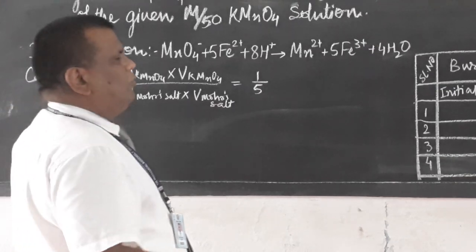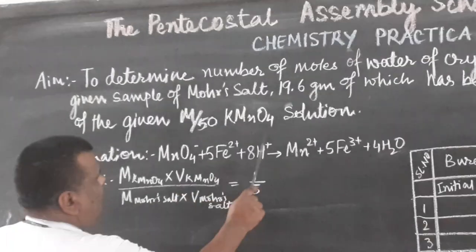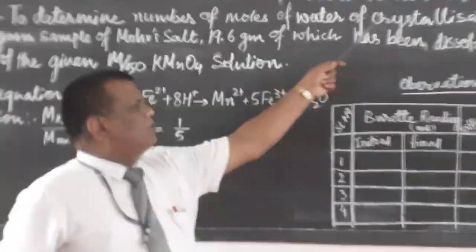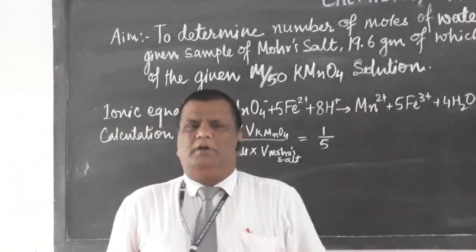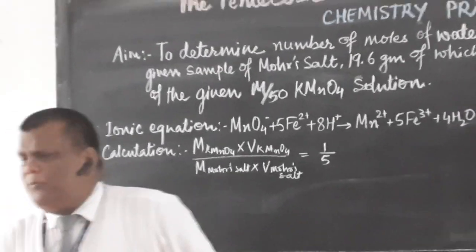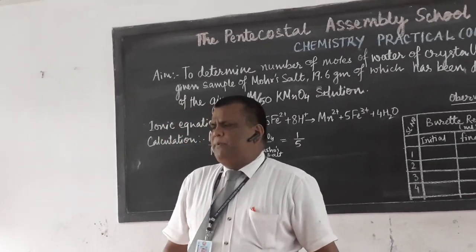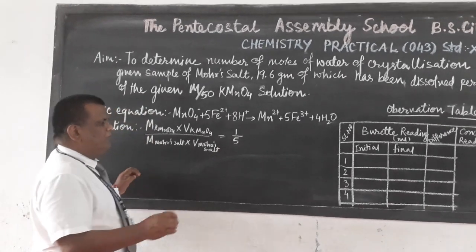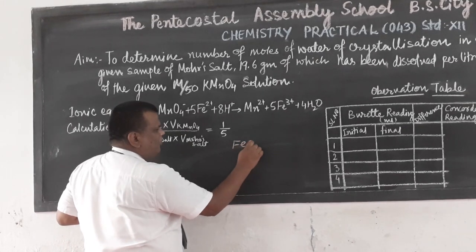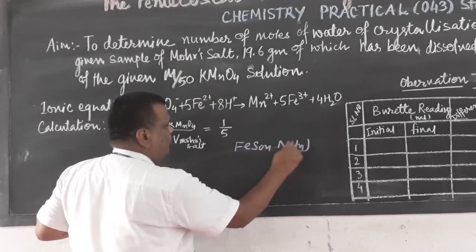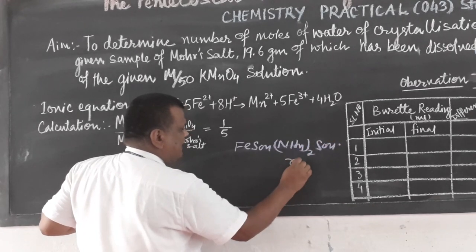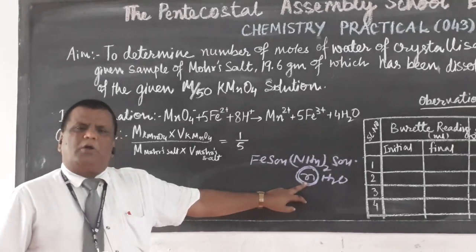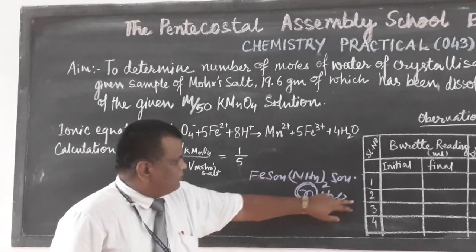So we have two solutions. One is KMnO4 whose molarity is given, and one is Mohr's salt whose strength is given as 19.6 g/L. You have to find the number of moles of water of crystallization in the sample of Mohr's salt. You must know the formula of Mohr's salt: FeSO4·(NH4)2SO4·nH2O. You have to find this N — the number of moles of water in Mohr's salt.